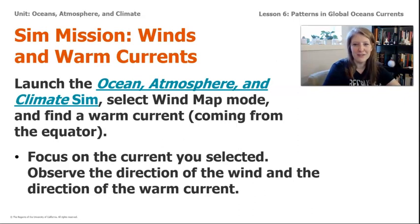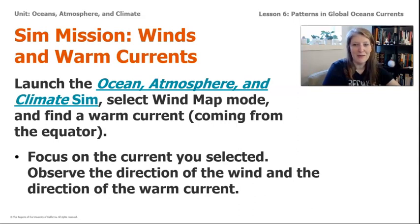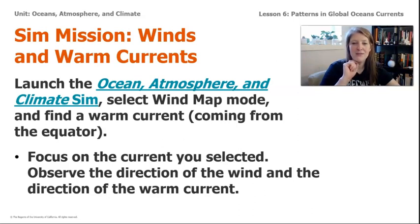So these are the directions. You read about a warm current called the Gulf Stream, so now let's investigate a warm current in the sim and make observations. We're going to launch the Ocean Atmosphere and Climate Sim, select Wind Map Mode, and find a warm current — we'll know it's warm because it's coming from the equator. Focus on the current you selected and observe the direction of the wind and the direction of the warm current.